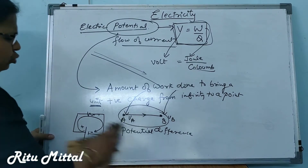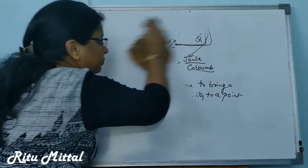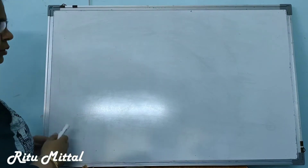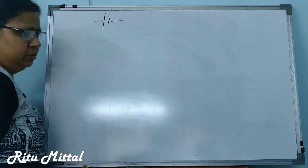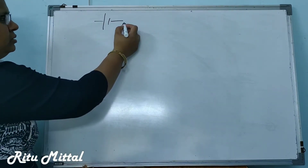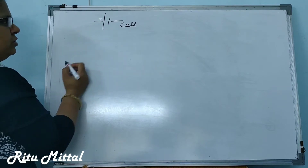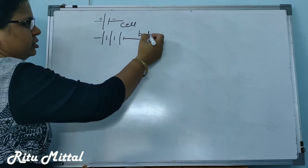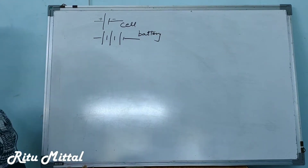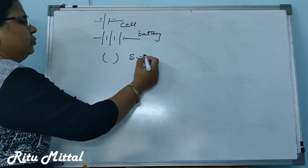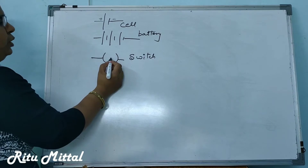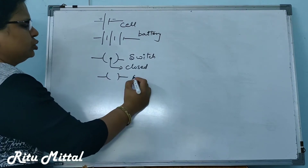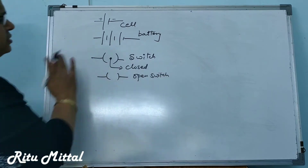Next, we will see some symbols used in electric circuits. The symbol for a cell has a long line for positive and a short line for negative. If you connect more than one cell, it becomes a battery of higher capacity. The symbol for a switch — if there is a dot in between, it is a closed switch; without a dot, it is an open switch.